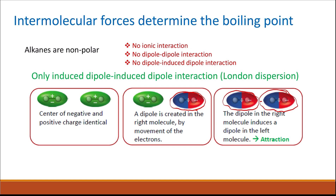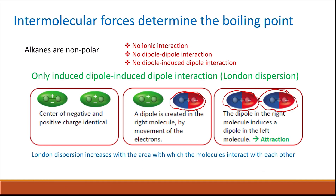The lower alkanes, like methane and ethane, are gases with very low boiling points. London dispersion forces increase with the surface area through which molecules interact. The more atoms a molecule has, the larger it is, and the more London dispersion or van der Waals forces it has — which is why boiling points increase with chain length.